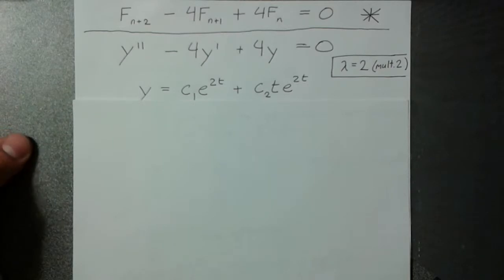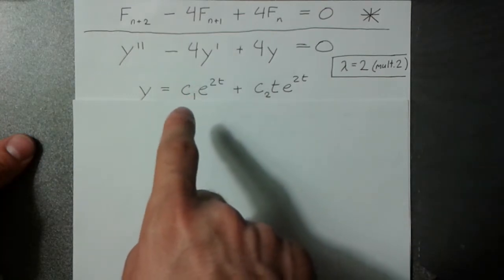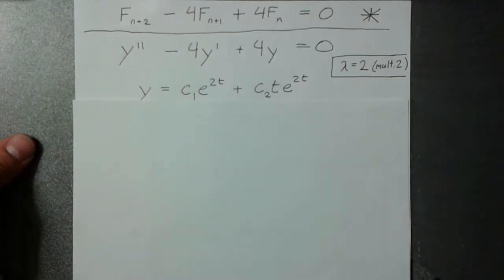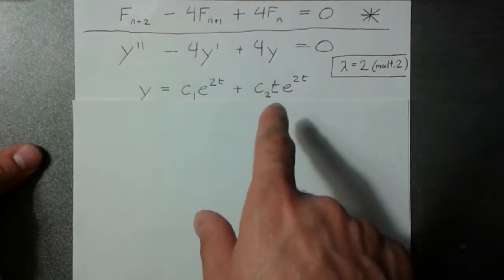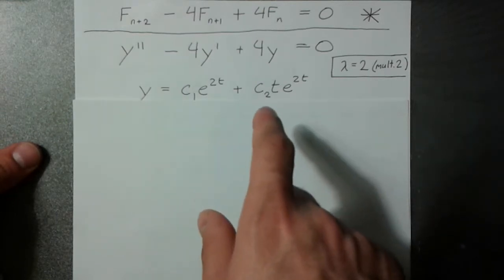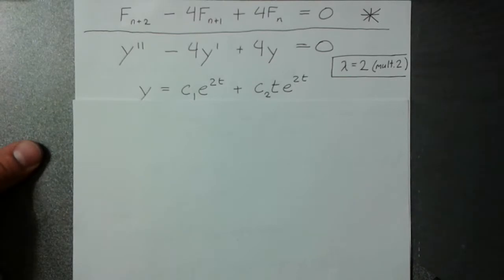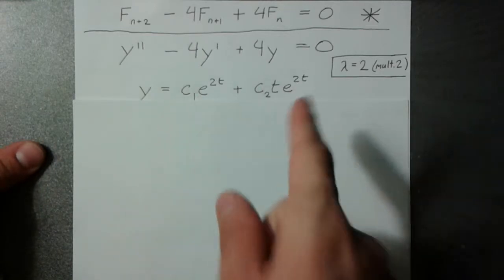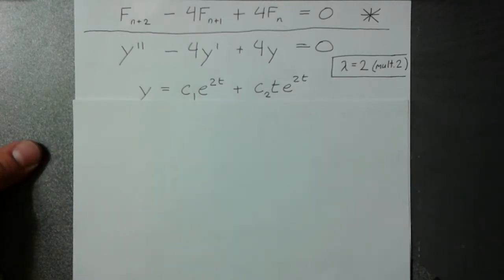You might remember from differential equations that the solution to this one is a constant times e to the 2t, as expected, plus another constant. And here's the unexpected part. The other fundamental solution is the same thing, but it's multiplied by t. And that gives you your two linearly independent fundamental solutions.